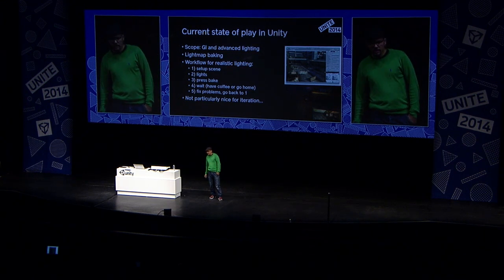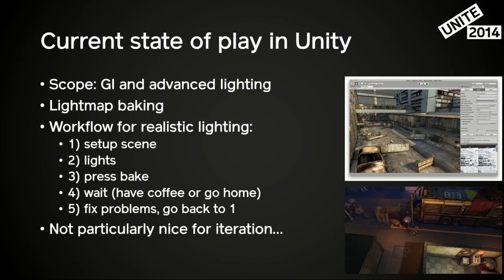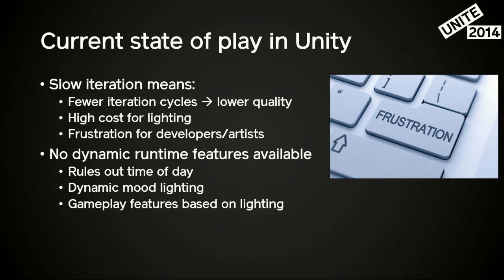The current state of play in Unity is that we have lightmap baking — I'm sure all of you are aware of that. The workflow is to set up your stuff, set up the lighting, then press your big button, and then it's going to take a while until you get any feedback. The iteration cycle for that is really slow and painful. That affects pretty much the number of iteration cycles that you can go through, and that means indirectly that you will get lower quality, because you don't have time enough to actually adjust the lighting to be perfect. So we have a lot of frustration for the lighters, or whoever is doing the lighting in your shop.